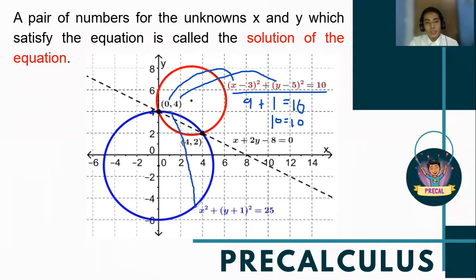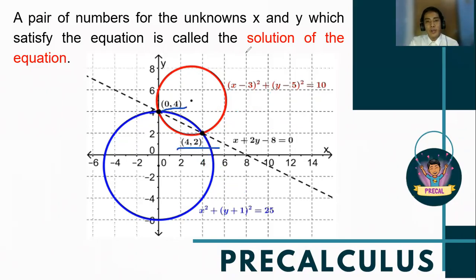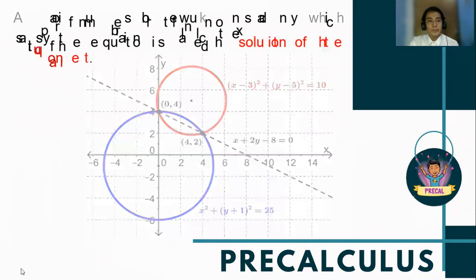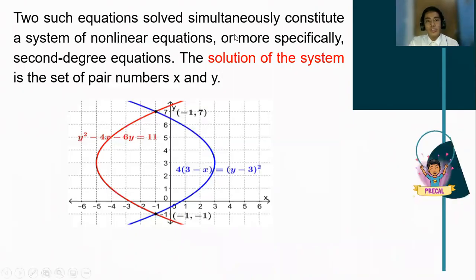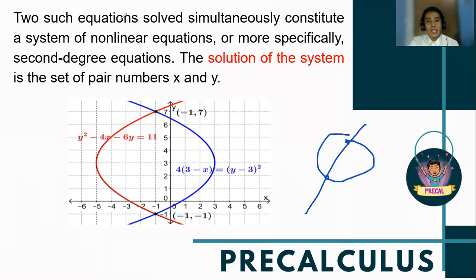When we substitute x equals 0 and y equals 4 into the second equation: 0 squared plus (4 plus 1) squared equals 25. The same will hold for the point (4, 2). Both (0, 4) and (4, 2) are the solutions to the given non-linear system. The two equations together constitute a system of nonlinear equations. Even with one circle and one line, the intersections can still form a nonlinear system.